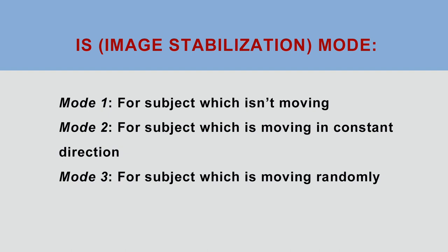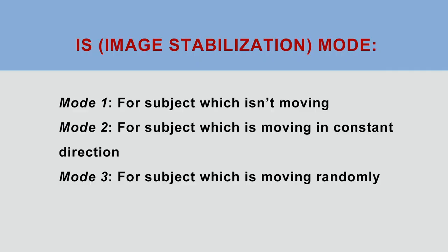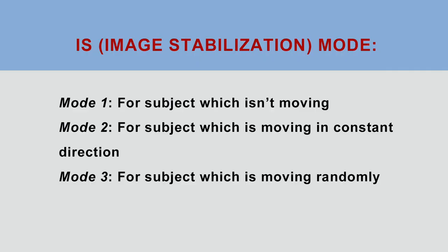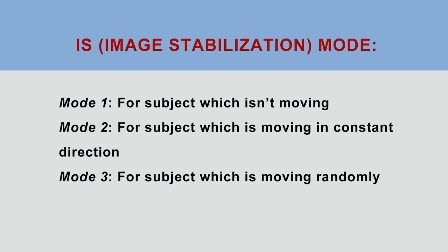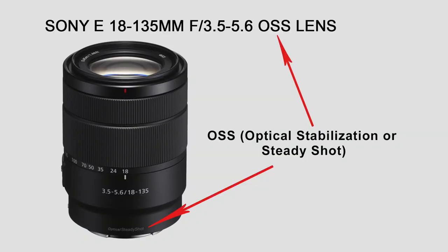Mode 1 is the most popular and used most often. It's recommended for any subject which isn't moving, and unlike with Nikon, it doesn't matter whether you are on stable ground or in a moving car — it corrects vibration in all directions. Mode 2 is recommended for a subject moving in a constant direction, like during panning. It will reduce blur from vertical camera movement while keeping the blur from horizontal movement. Mode 3 is recommended for a subject moving more randomly, like small birds or an athlete during a sporting event.